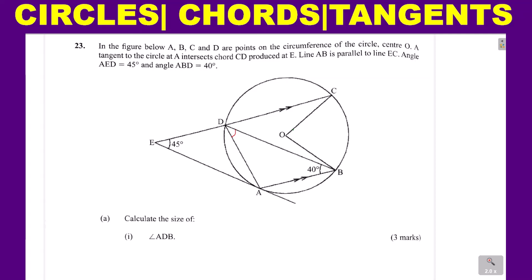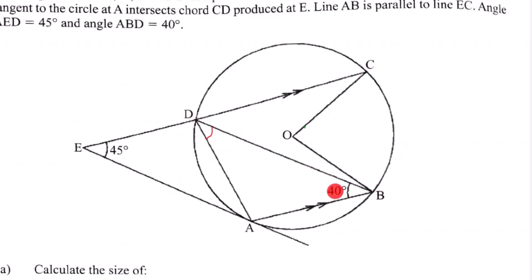Looking at the two parallel lines AB and EC, line DB acts as a transversal. Therefore, angle ABD of 40 degrees is alternate to the angle on the other side, so that angle is also 40 degrees. These are alternate angles formed by a transversal cutting parallel lines.